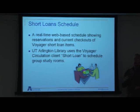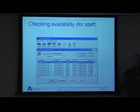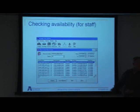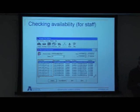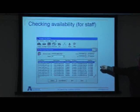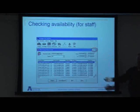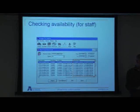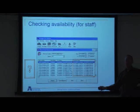At our library, we use short loans for reserving group study rooms. If you've ever used the circulation client to do that, this is what staff have to contend with to look up availability. We only have a handful of rooms, but we reserve up to two weeks in advance. Trying to make head and tails out of two weeks' worth is difficult, and you'll notice you can't maximize that screen — what you see is what you get, so there's a lot of scrolling. You have to scroll to get to the important part, and when you scroll there, you can't even see which rooms you're looking for.